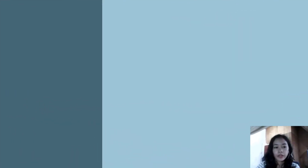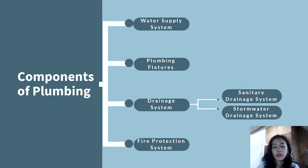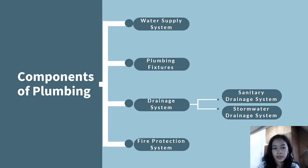Let me briefly discuss the components of plumbing. There are actually three main components of plumbing: the water supply system, plumbing fixtures, and drainage system — which has two types: the sanitary drainage system and the storm water drainage system. And lastly, there is the fire protection system, which is optional because not all buildings may need this, but it is recommended for high-rise buildings.